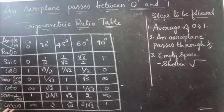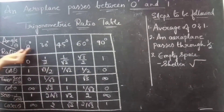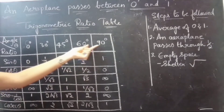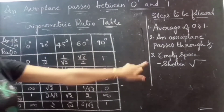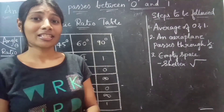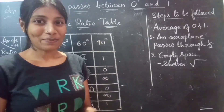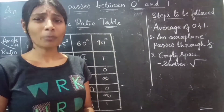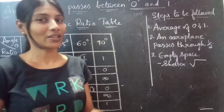So these are the ratios for cosecant, secant, cot, tan, cos, and sine for 0°, 30°, 45°, 60°, and 90°. We followed all three steps to construct the trigonometric ratio table. We have constructed the table using the technique titled 'An Aeroplane Passes Between 0 and 1.' Hope this video helps you in finding trigonometric ratios. If you have any doubts, just leave your comments. See you in the next video — bye bye!